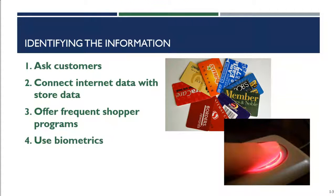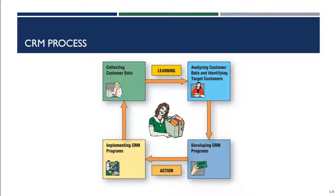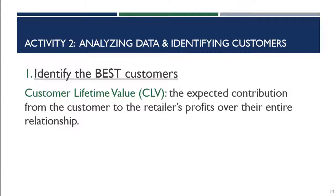That's the first activity — collecting information about the customer. Now we're going to talk about the second activity: analyzing our customer data and identifying our target customers. We've spent a lot of time, money, and effort collecting this data, so what do we do with it? We analyze it. The first of two main objectives when analyzing customer data is to identify our best customers. We look at how valuable a customer is to us using a measure called customer lifetime value, or CLV — the expected contribution from a customer to the retailer's profits over their entire relationship.